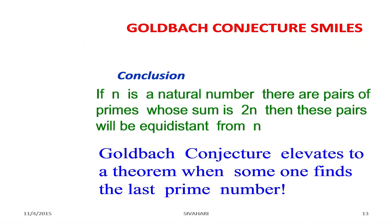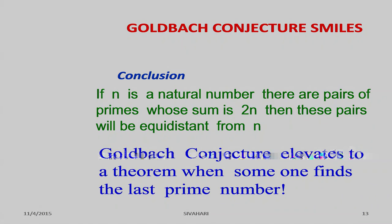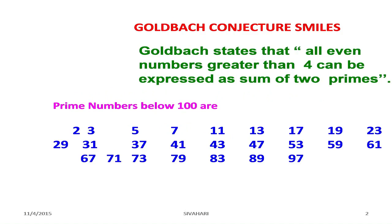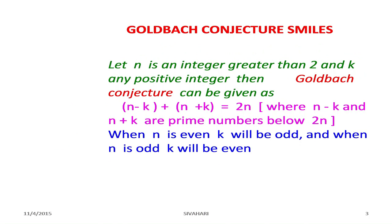The Goldbach Conjecture elevates to a theorem when someone finds a proof — or when someone finds the last prime number — establishing it definitively as a theorem.